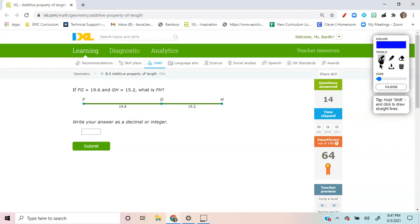Let's go ahead and get started. So if I read this story question, F to G is equal to 19.6. This measure from F to G is 19.6.